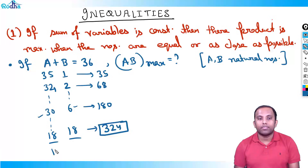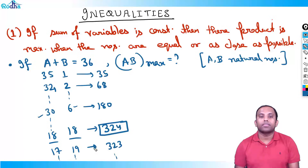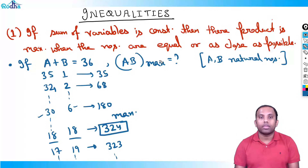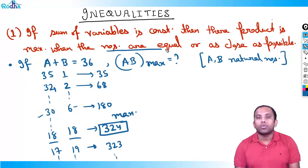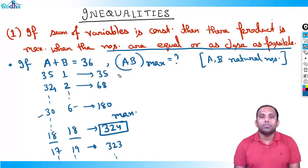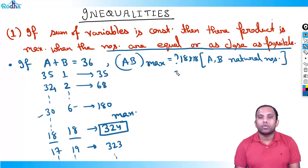After a=18, b=18, the product starts to decrease — for a=17, b=19, a into b is 323. So 324 is the maximum value. This confirms: if a plus b is constant, then the maximum value of a into b occurs when both numbers are equal or as close as possible. They may not be equal every time.